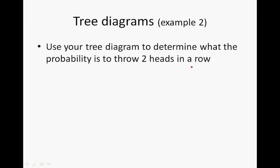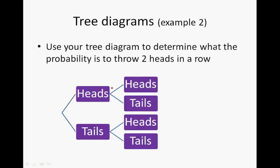Use your tree diagram to determine the probability of throwing two heads in a row. The only option to throw two heads in a row is by starting with heads — we throw heads first, and then we throw heads again.